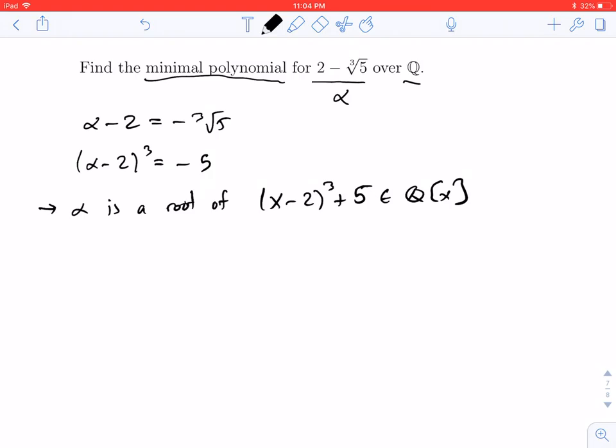And in fact, (x - 2)³ + 5 is irreducible. Now how do I know it's irreducible? Well, put that aside for a second.